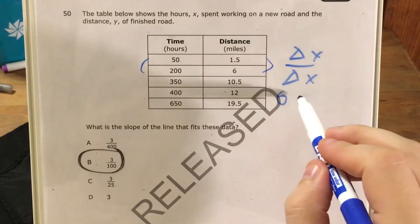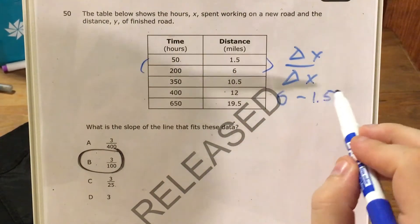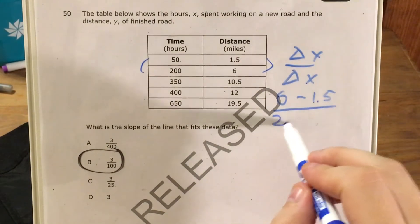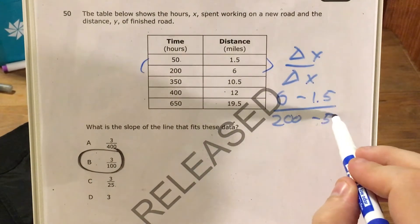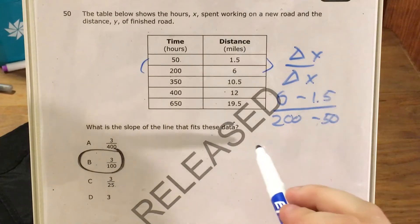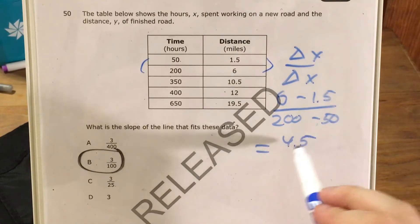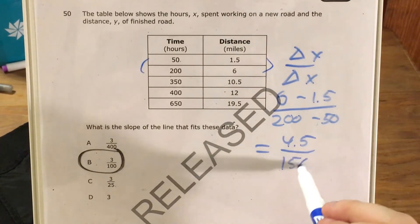So for my change in Y, that's 6 minus 1 and a half. For my change in X, that's 200 minus 50. 6 minus 1 and a half is 4 and a half. 200 minus 50 is 150.